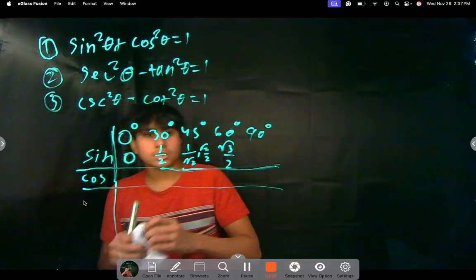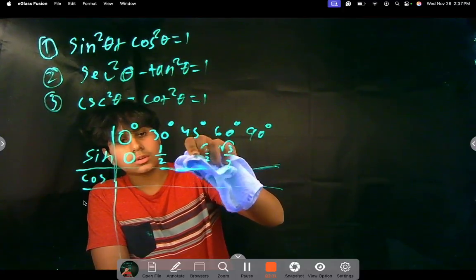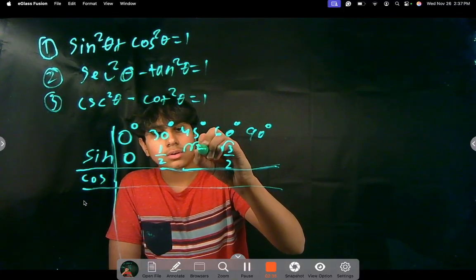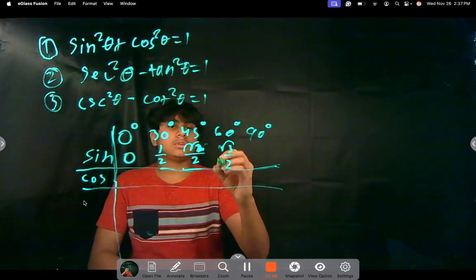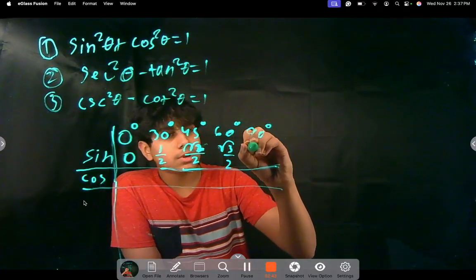Let me make this less confusing, actually. Let me just keep the rationalized form, because otherwise it might cause some confusion. It's root 2 over 2, and sine of 60 degrees is root 3 over 2, and sine of 90 is 1.